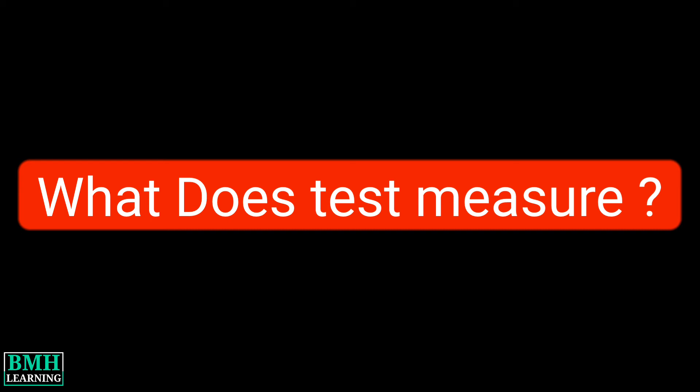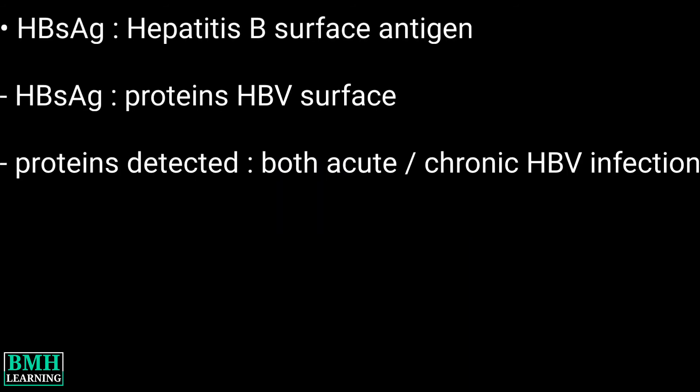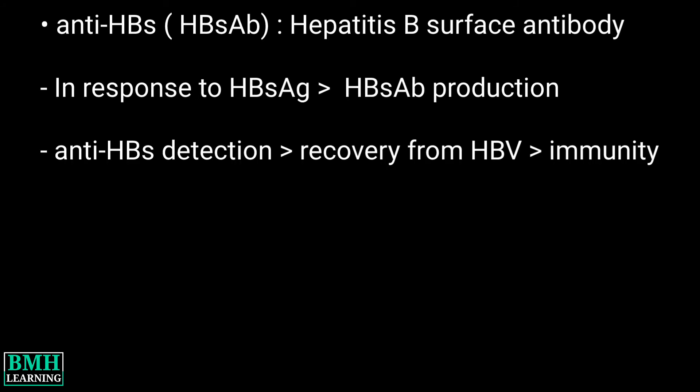What does the test measure? The hepatitis B test looks for antigens, antibodies, or the genetic material of the hepatitis B virus. The hepatitis B panel includes the following tests. HBsAg, that is hepatitis B surface antigen — these are proteins present on the surface of the hepatitis B virus. These proteins can be detected in high levels during both an acute or chronic hepatitis B infection.